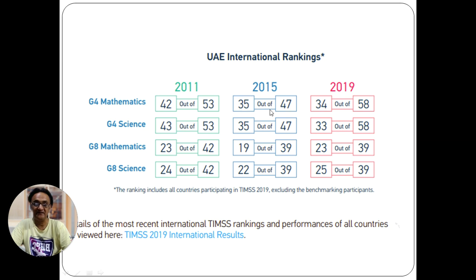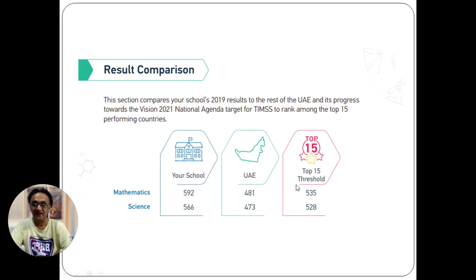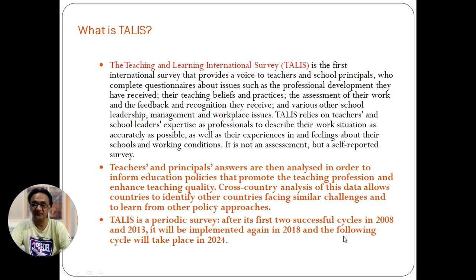For the complete results, you can visit the IEA website or Boston College — those resources will help you a lot. In terms of school participation: 592 schools participated in science and 566 in mathematics. The UAE scores are 481 in mathematics and 473 in science, and the top threshold score is shown here — showing good improvement overall.